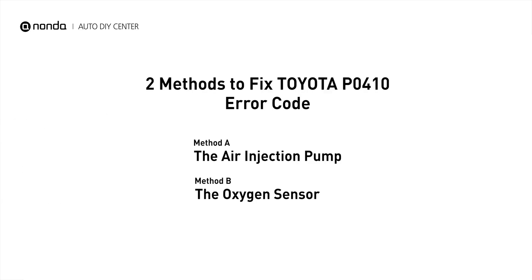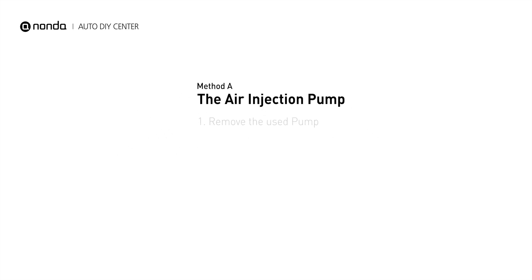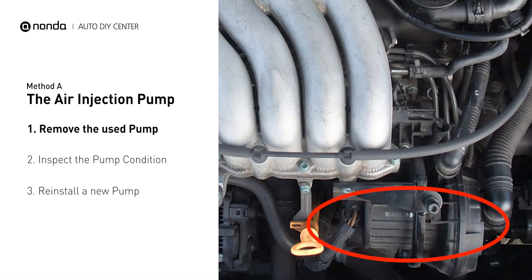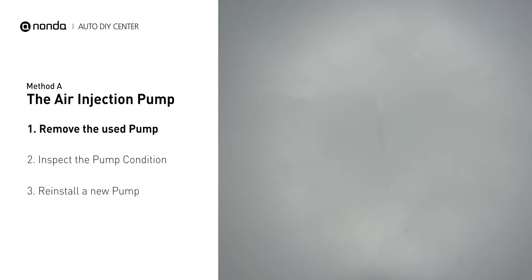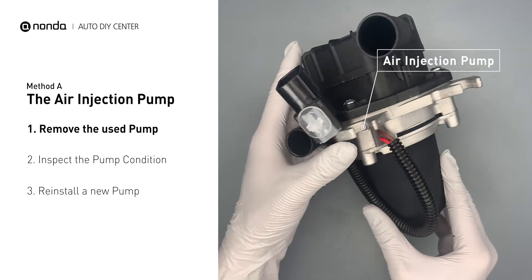Here are two of the most practical solutions to fix Toyota's P0410 error code. Method A: the air injection pump. The air injection pump will be placed at the front of the engine with the serpentine belt wrapped around it. First, carefully remove the air injection pump from your engine.